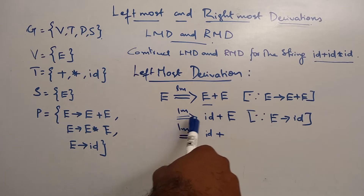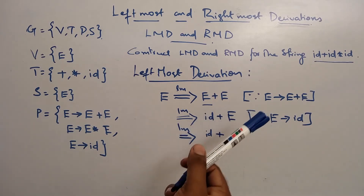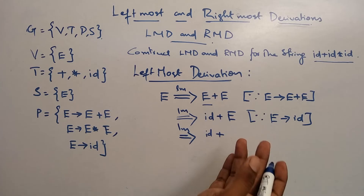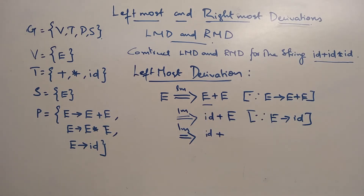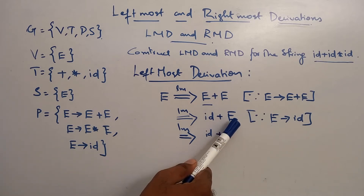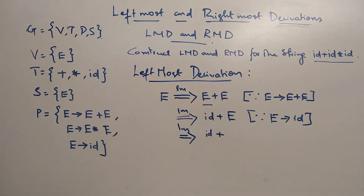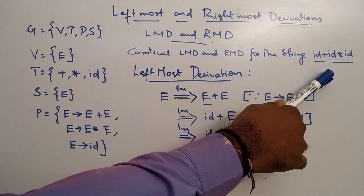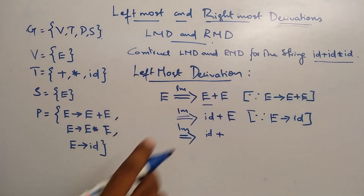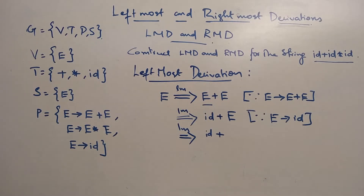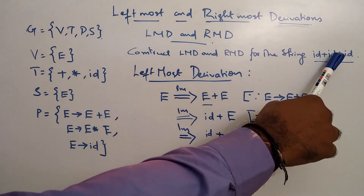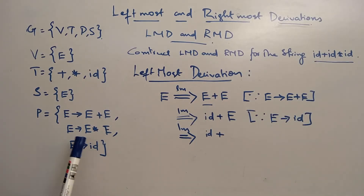So if we have a non-terminal, here is the E — rightmost. Leftmost non-terminal now is E. So we need to replace the leftmost non-terminal first in leftmost derivation.